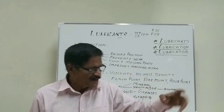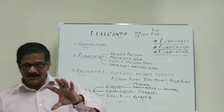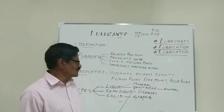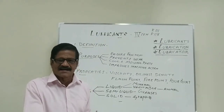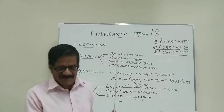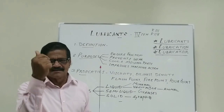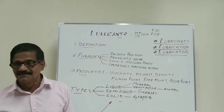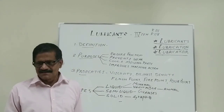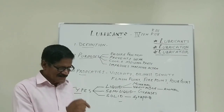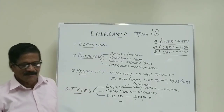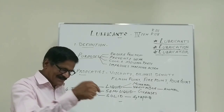When the oil is heated further and a flame is brought near it, it will ignite and continue to burn. That temperature is called the fire point. When you put the lubricant at the fire point temperature, it will sustain combustion.